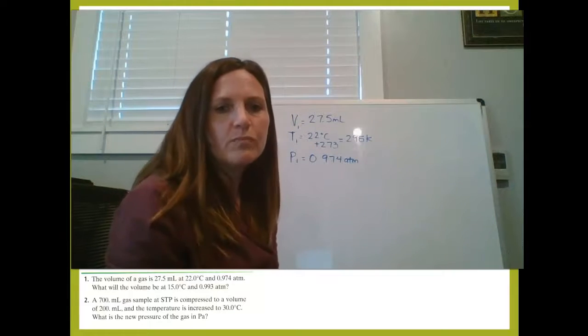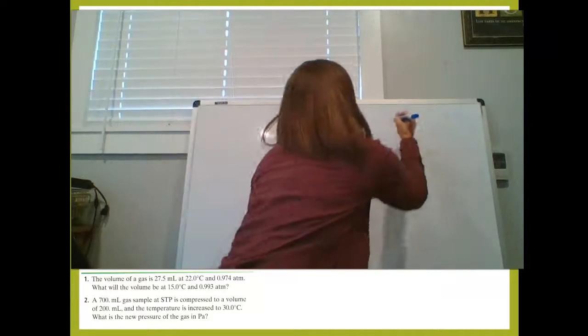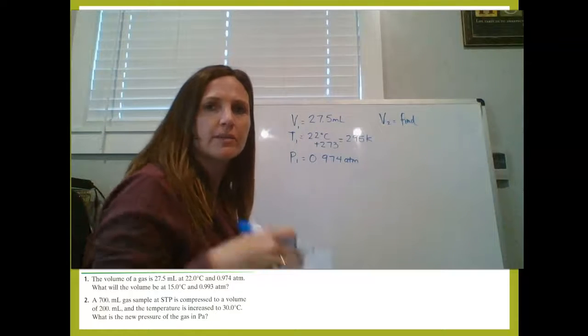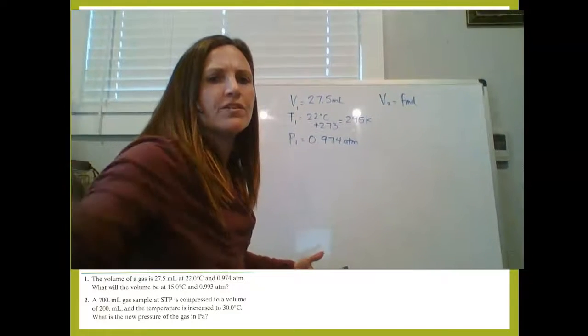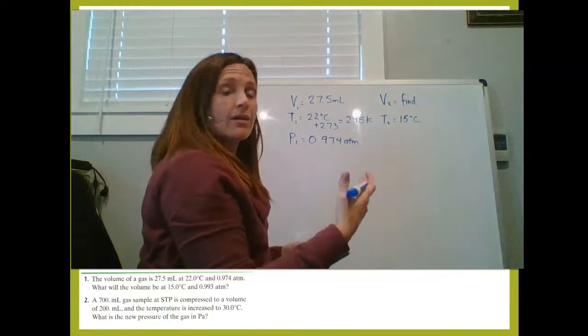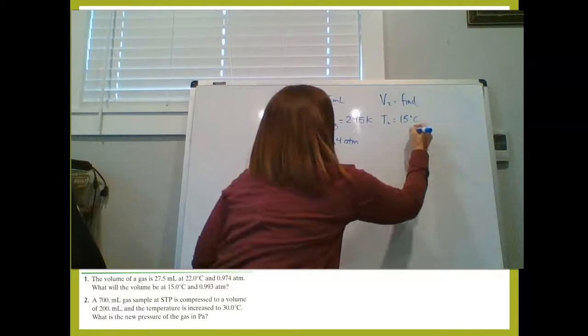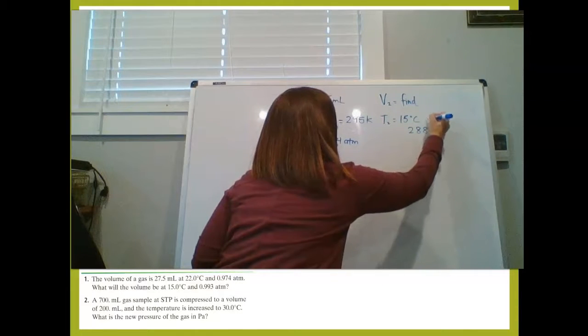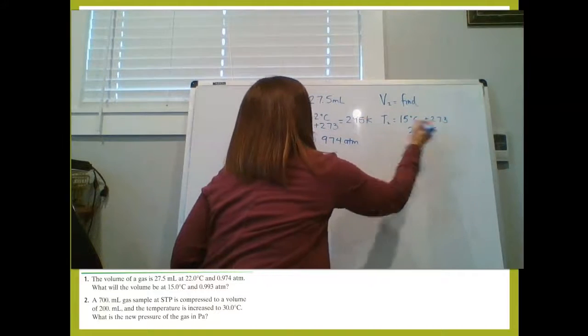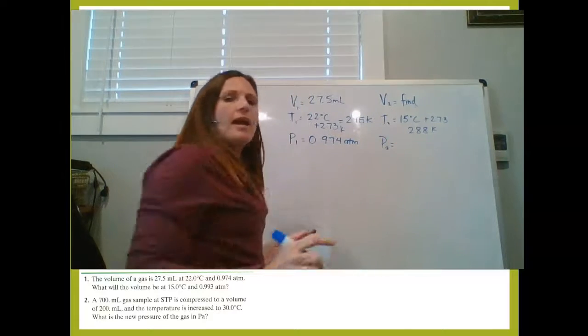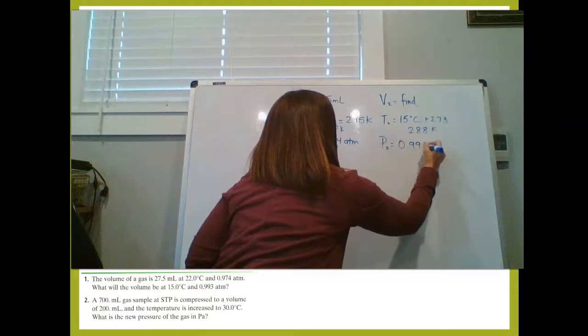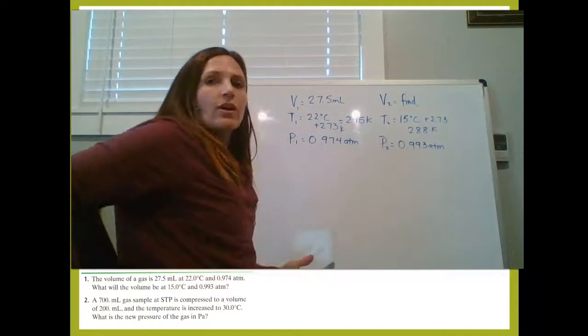So that's the first part of our problem. As we keep reading, we get what will the volume be? So now we know that we're trying to find V2. V2 is what we're trying to find in the problem at 15 degrees Celsius. So T2 equals 15 degrees Celsius. Once again, we're going to add our 273 to that, so that's 288 Kelvin. And a pressure of 0.993 ATM.